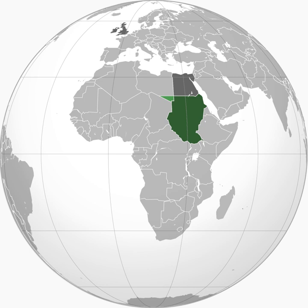The Anglo-Egyptian Sudan was a condominium of the United Kingdom and Egypt in the eastern Sudan region of northern Africa between 1899 and 1956, but in practice the structure of the condominium ensured full British control over the Sudan with Egypt having only local influence. It attained independence as the Republic of the Sudan, which since 2011 has been split into Sudan and South Sudan.